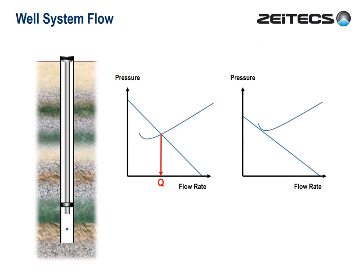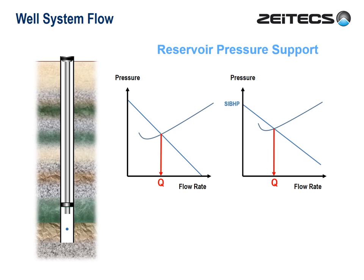But before we think about artificial lift, let's talk about other ways that we can make this well flow. Firstly, we can lift the inflow performance line. What we're doing here is increasing the bottom-hole pressure without changing the gradient of the line, which is the productivity index. We make the lines cross and the well flows. This is typically what we do with reservoir pressure support — for example, water injection, produced water re-injection, or gas injection.